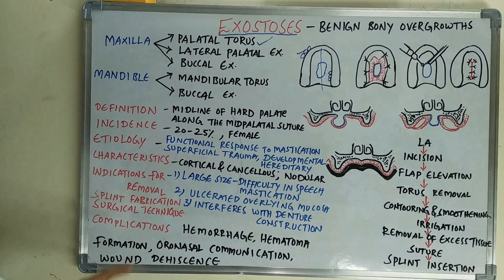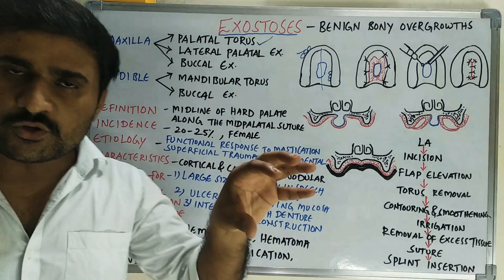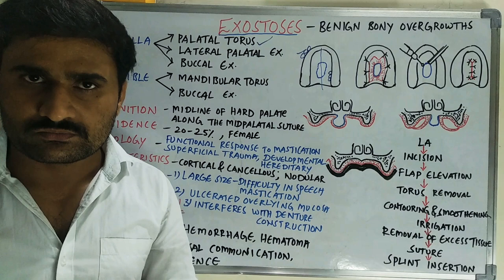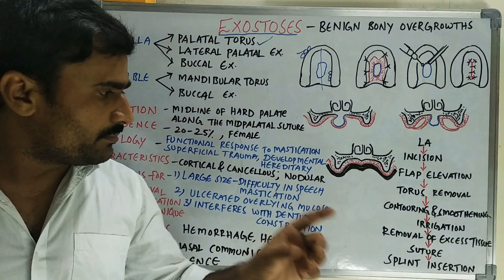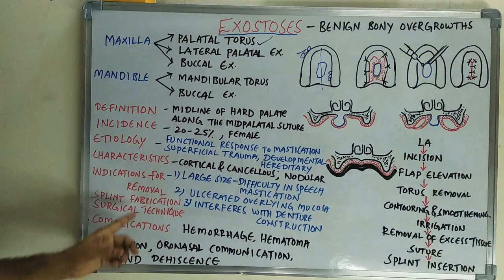Regarding characteristics: the torus contains the same structures as the maxilla or mandible — cortical bone along with cancellous bone. The torus also includes an outer cortical plate and inside cancellous bone. Size and shape varies, but palatal torus is most commonly nodular in shape. The overlying mucosa is less vascular.